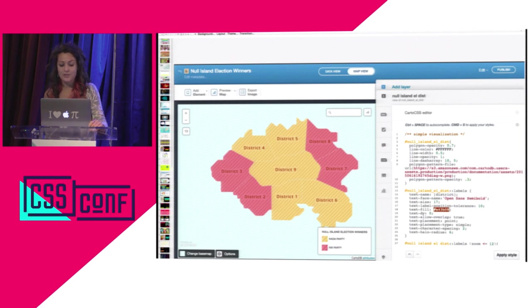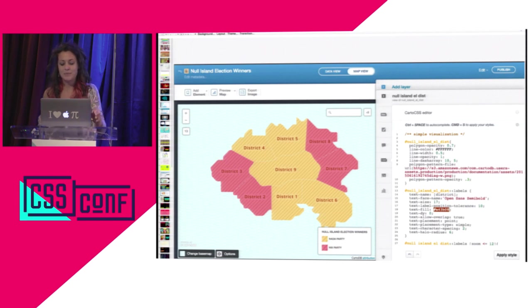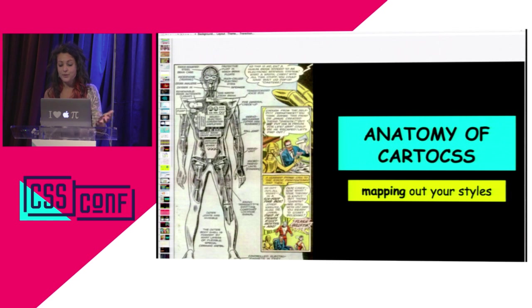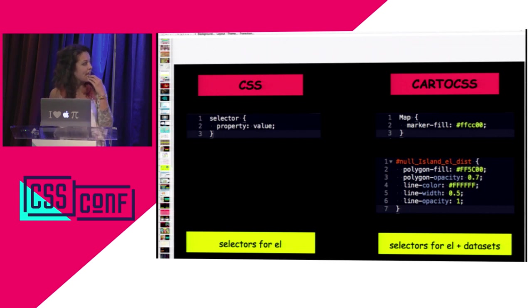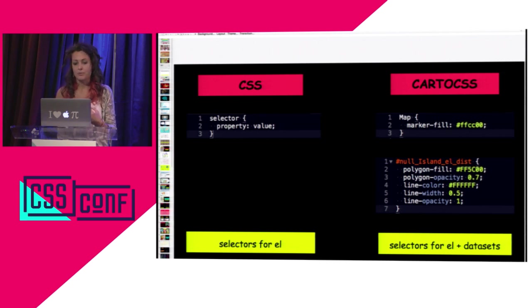These are the kinds of things you can make with CartoCSS. The Null Island election map has the NADA party and the NICS party — you separate polygons into districts and apply CSS to color them according to vote count. In CartoCSS, what you're styling is often the data itself. The name of your data set is the ID, and you style the data that plots to your map. People want to make their data pop off of the base map.